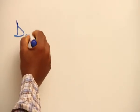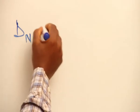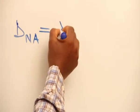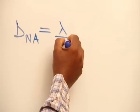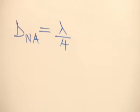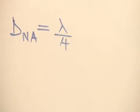Distance from node to the antinode is equal to wavelength over 4. That's what we mean by that. With this, we've concluded our study on waves.